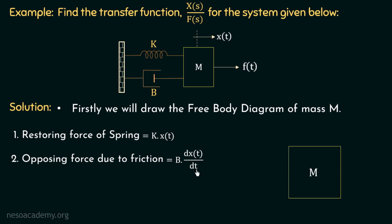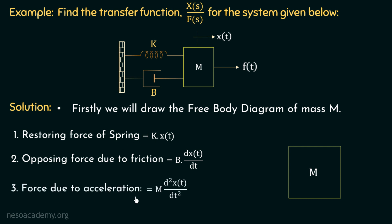There is one more force acting on the left hand side. If we try to move this body of mass M to the right hand side by applying force f, the mass M of this body will try to oppose the change in its position, and this opposing force will be directly proportional to the acceleration caused in this body. We will call this force the force due to acceleration, and it is equal to m multiplied with d²x/dt². The acceleration is the double derivative of displacement with respect to time. Now we know all the opposing forces acting on this body of mass M, and we are in a position to draw the free body diagram.